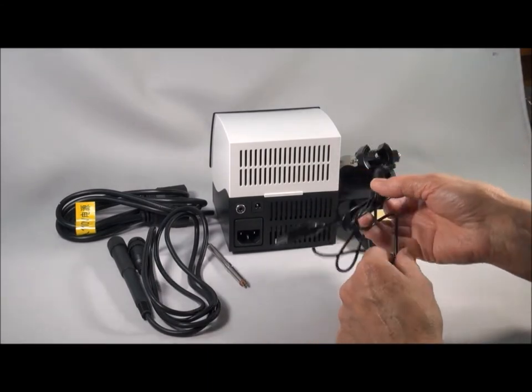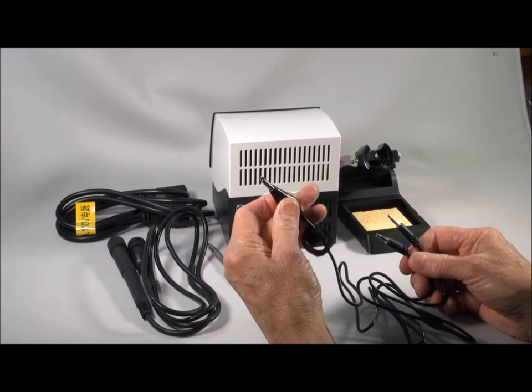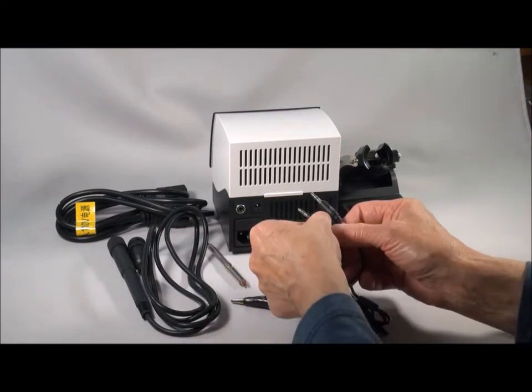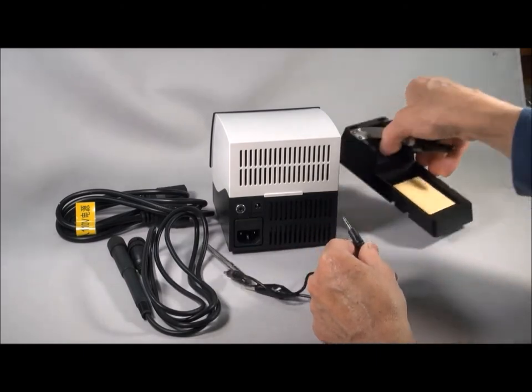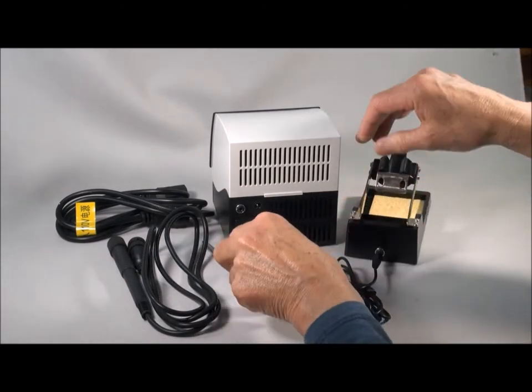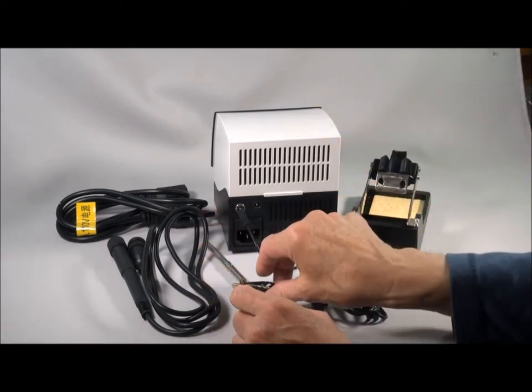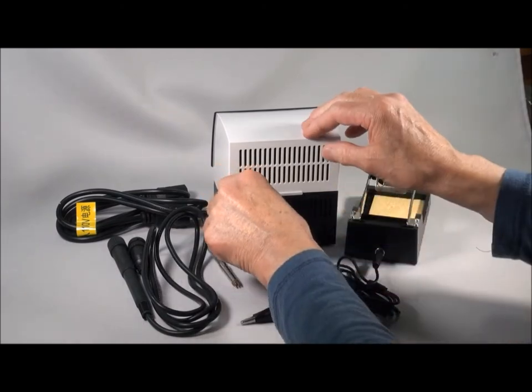It comes with a grounding cord. You don't want to have static electricity running around your electronics. You'll certainly burn stuff out. One end of the grounding cord goes into the unit itself and the other one goes into the stand that you put the iron into. Then you clip onto your work that you're working on. Very convenient.